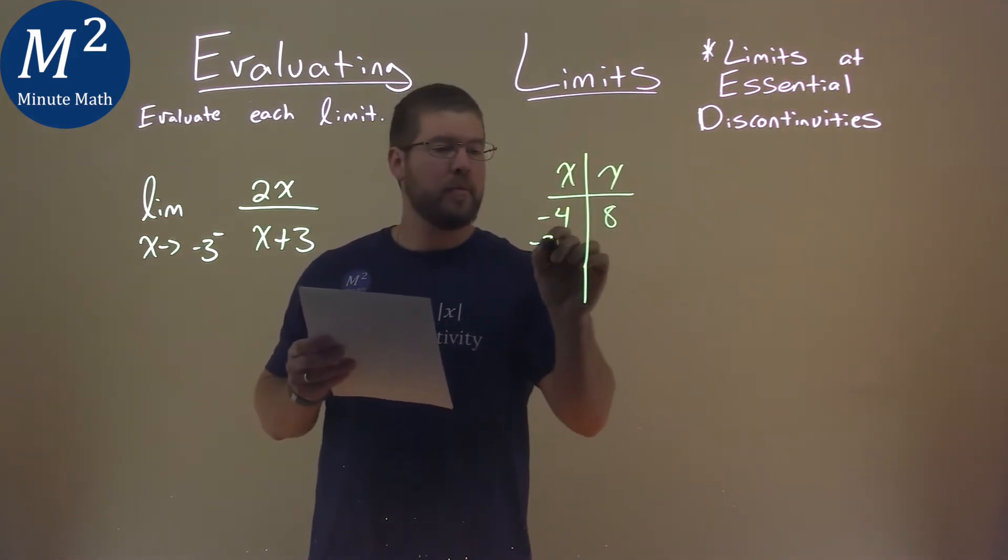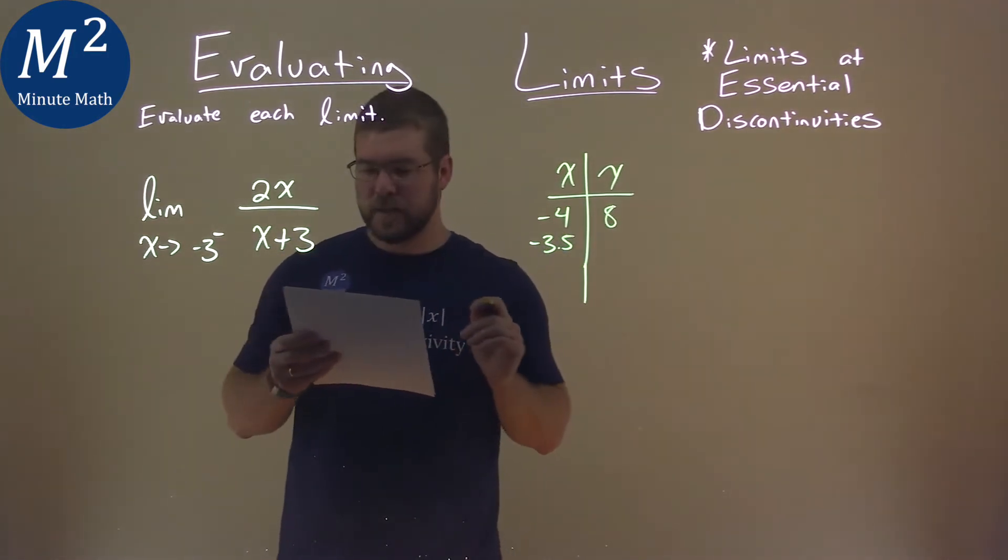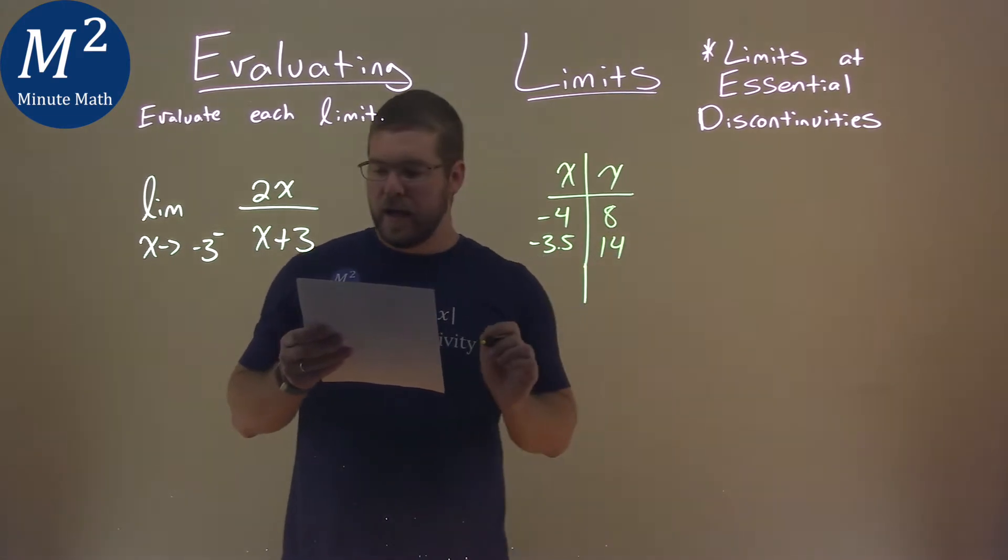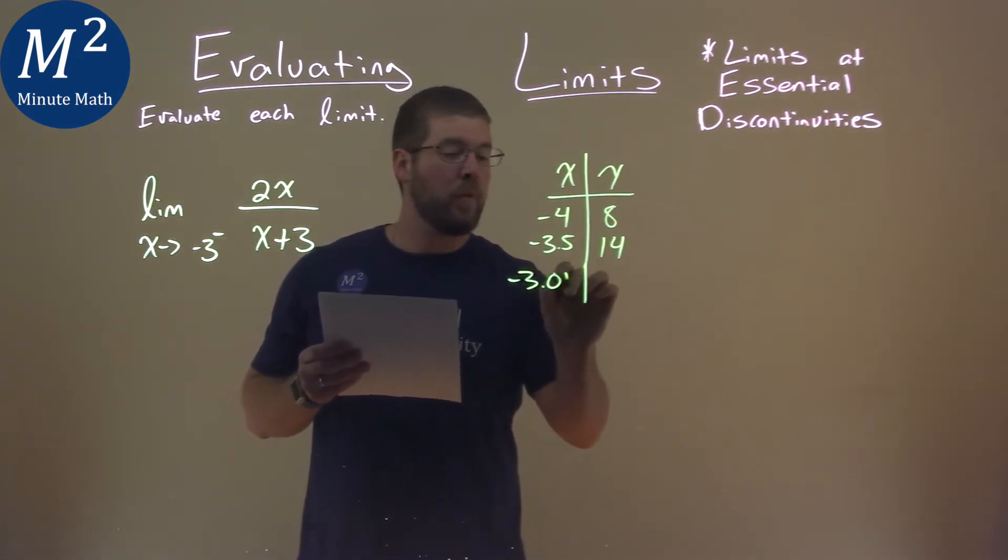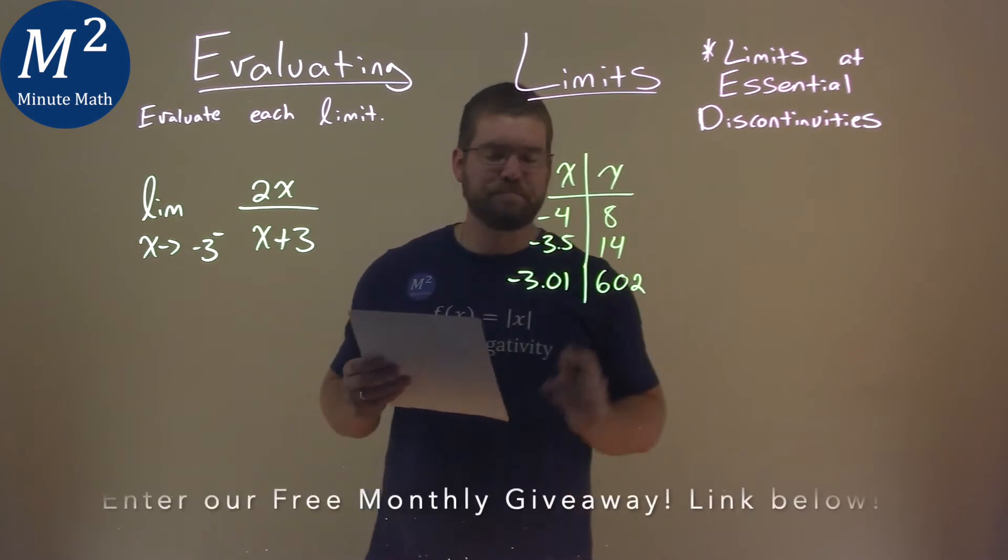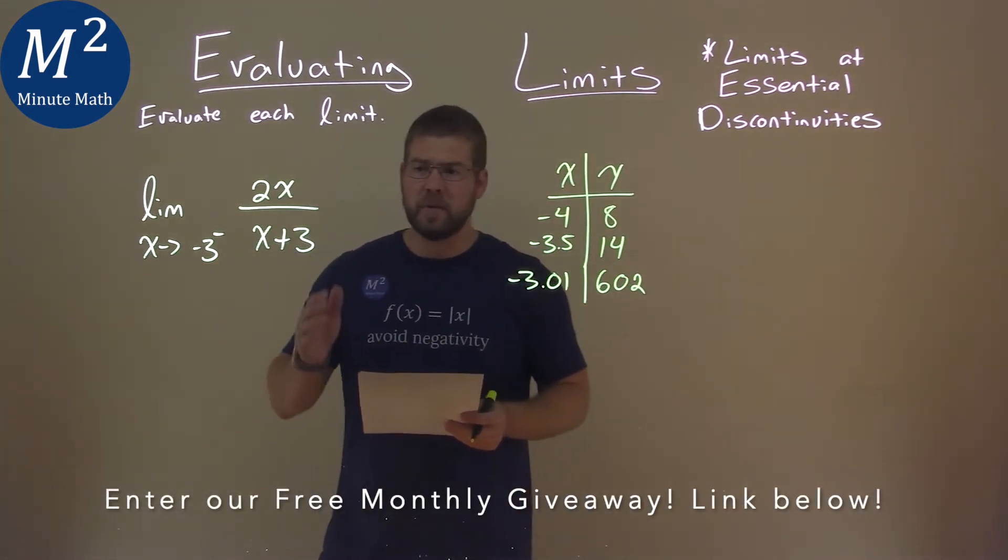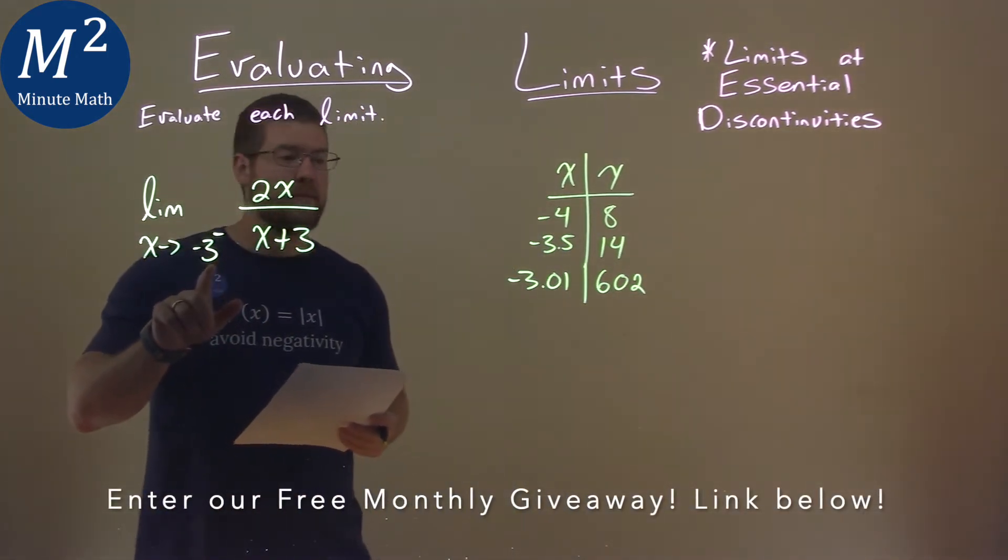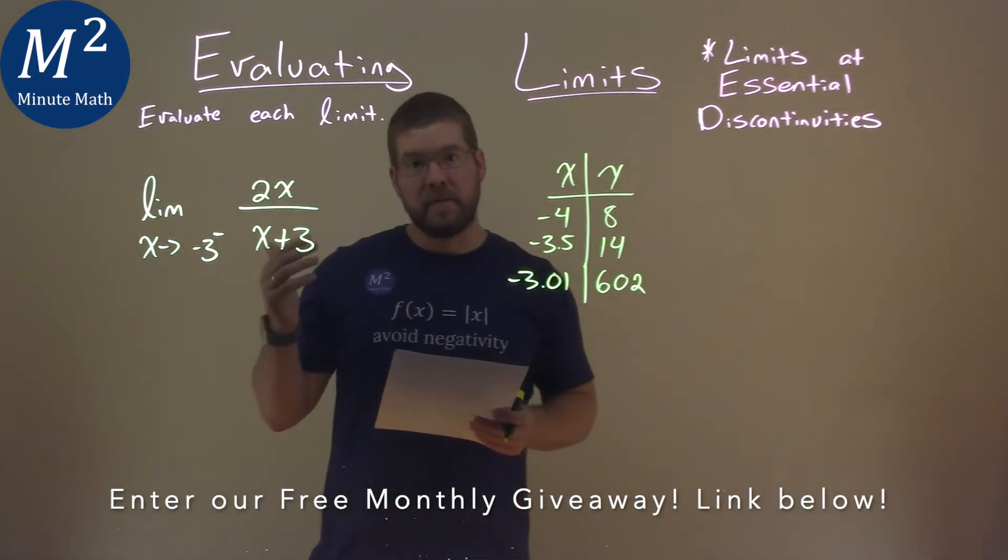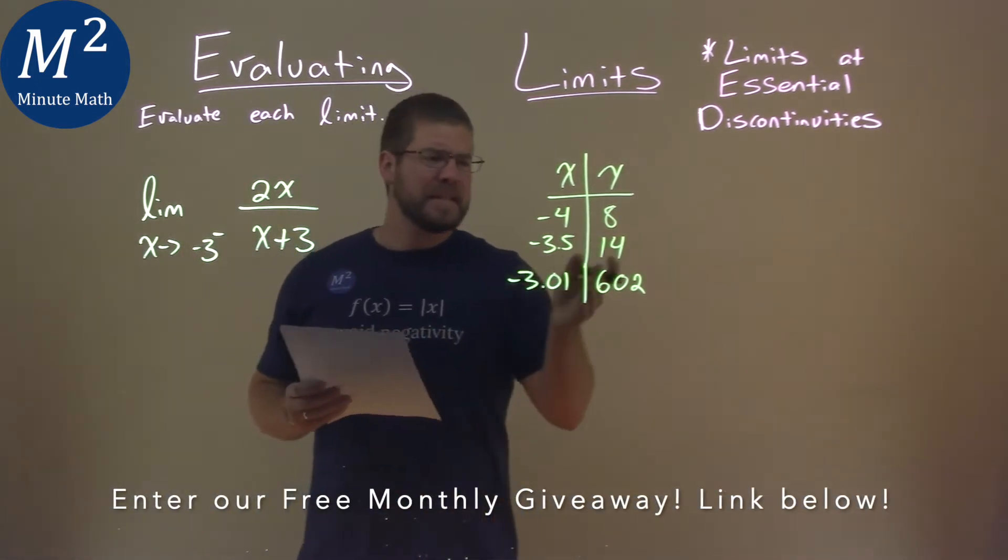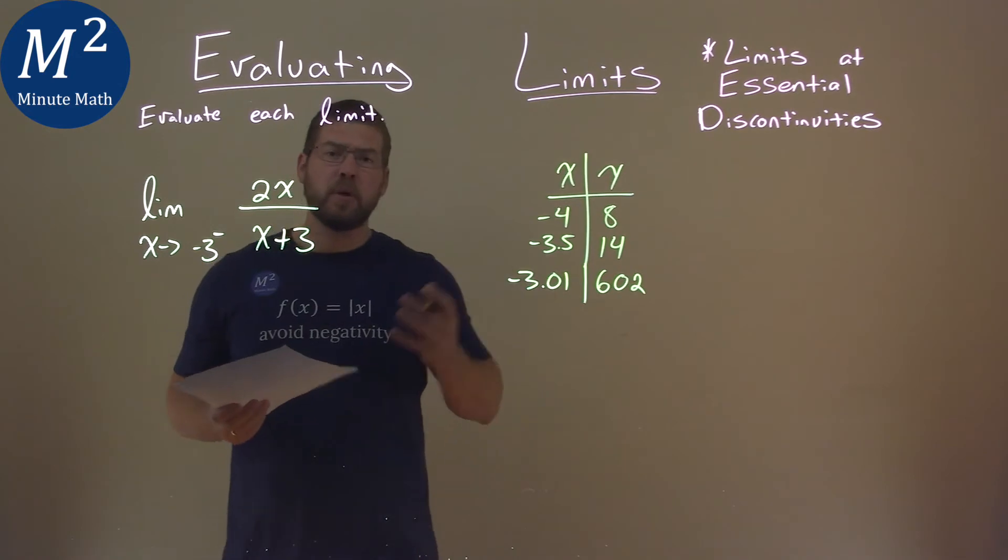If we put negative 3.5 in for x, we get 14. And negative 3.01 in for x, we get 602. Those are pretty large values as we get closer and closer to negative 3 from the left hand side. We can see that this limit is probably approaching infinity.